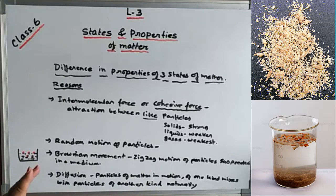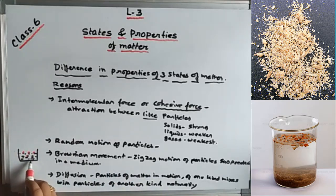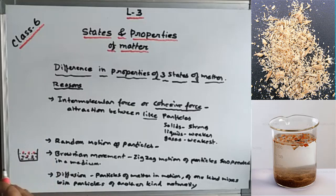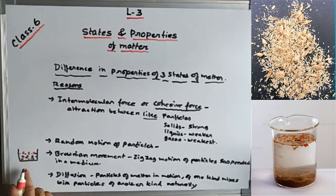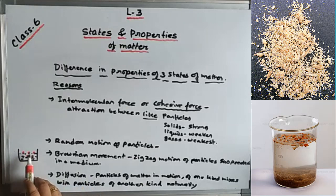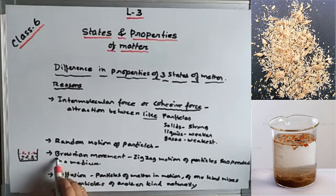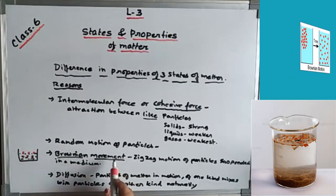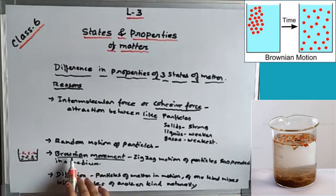This endless zigzag motion of particles suspended in a medium is known as Brownian movement. For example, if chalk powder is sprinkled into water, the chalk powder moves here and there endlessly — water acts as the medium, and the chalk powder particles are suspended in it, moving in random directions. The chalk powder will never dissolve — it will remain suspended and move endlessly. This movement is known as Brownian movement, discovered by scientist Robert Brown.